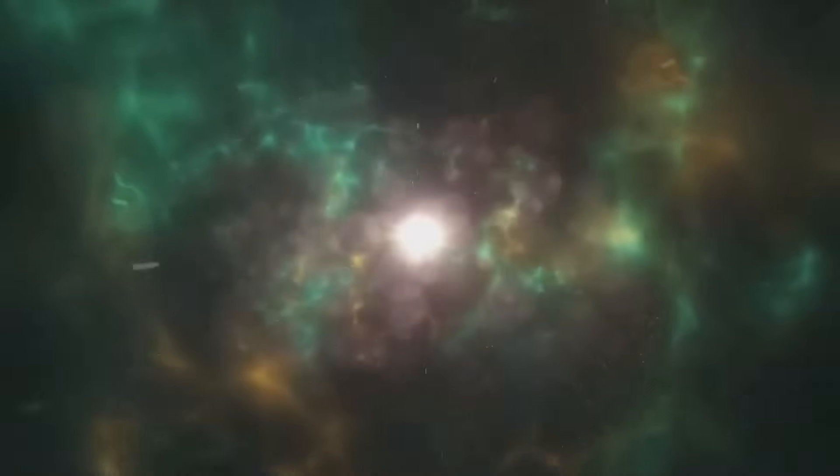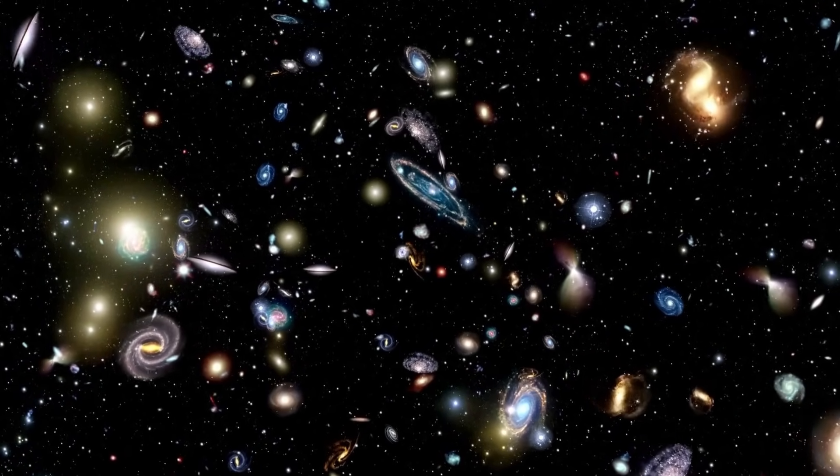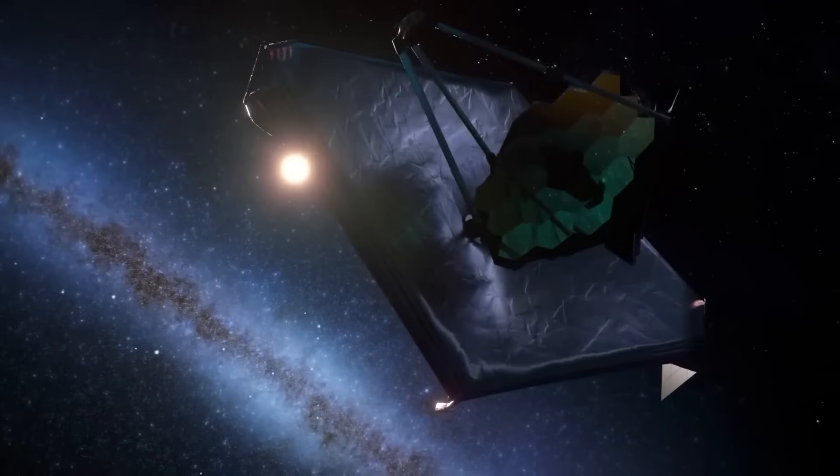That means they formed just 400 to 500 million years after the Big Bang. According to most theories, galaxies should still be in their baby phase at that time. Small, chaotic, and slowly growing. But what JWST found were giant, fully formed galaxies with billions of stars.